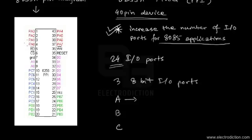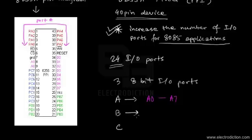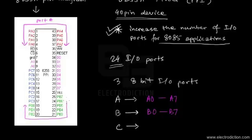Port A ranges from A0 to A7. Looking at the pin diagram, that is pin numbers 1, 2, 3, 4, and then 40, 39, 38, and 37 — all these taken together form port A of the 8255A chip. Similarly, we have port B, which ranges from B0 to B7, covering pin numbers 18, 19, 20, 21 through to 25. This is basically the span of port B.